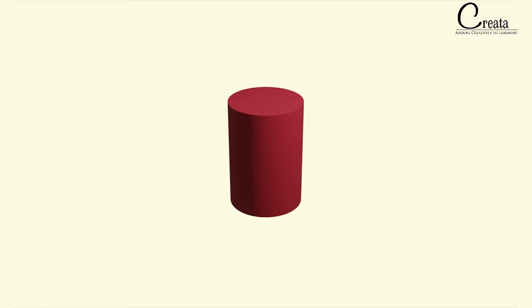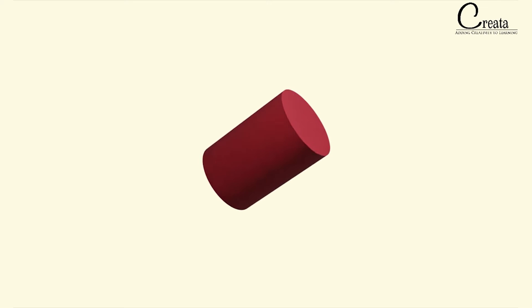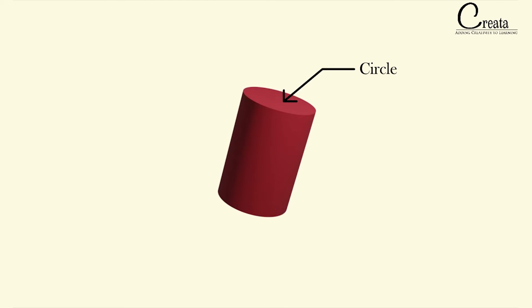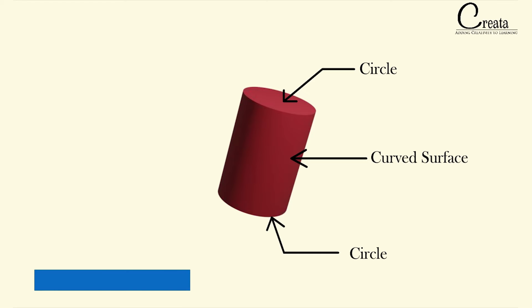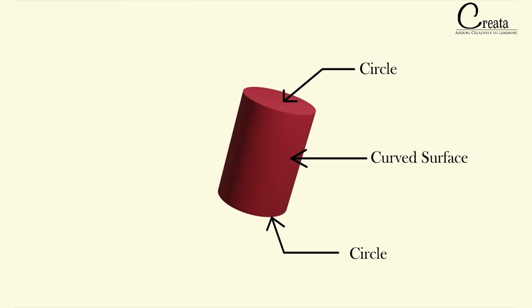Let's move further and observe this cylinder in detail. If you observe this cylinder, it has two faces — the topmost face and the bottom face — and these two faces are circular in nature. Further, we have also got one curved surface. So basically the cylinder is made up of three parts: the topmost circular plate, the curved surface, and the bottom circle. Two circular faces and one curved surface. This is the basic construction feature of a cylinder.